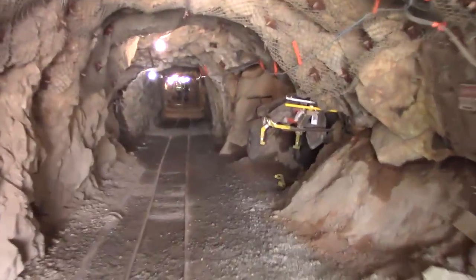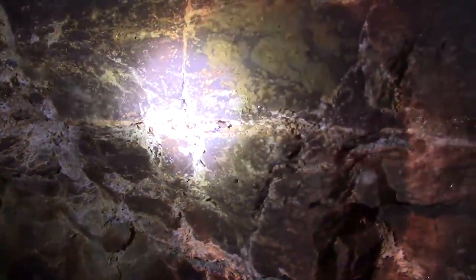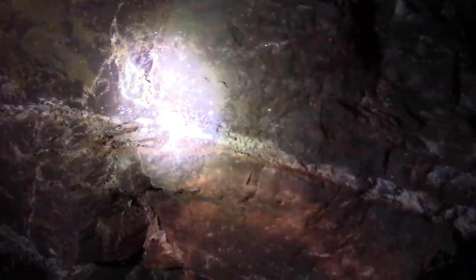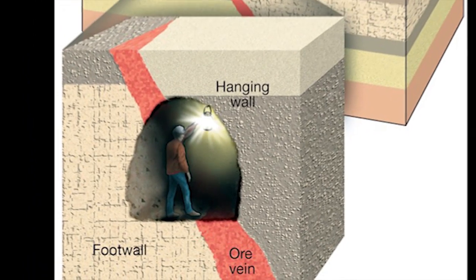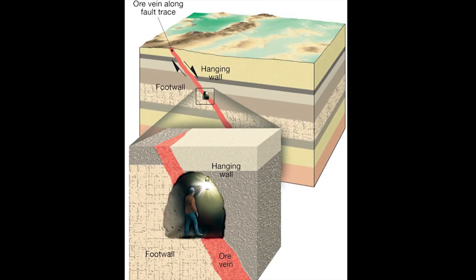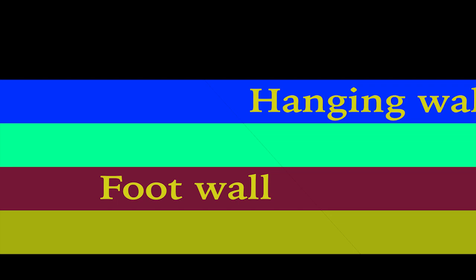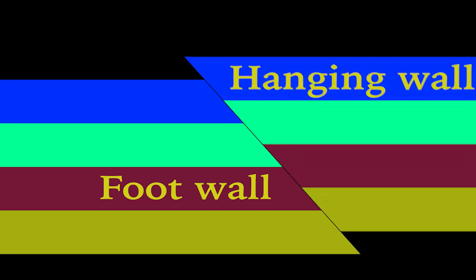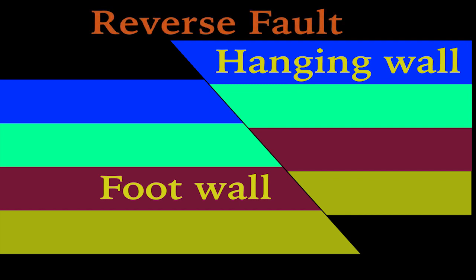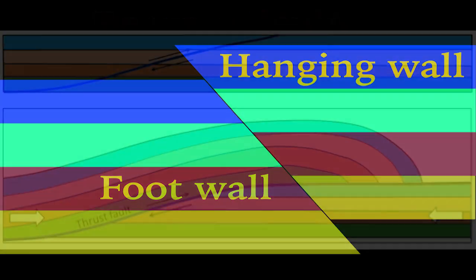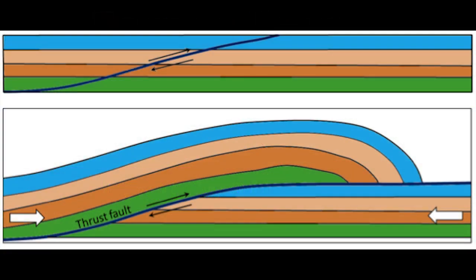Miners through the ages have dug down along faults to pull out the ore material, and finding themselves on the fault, they coined the terms foot wall and hanging wall. The foot wall is under their feet, and the hanging wall is hanging over their heads. Every fault that is not perfectly vertical has a foot wall and a hanging wall, and it is by their relative motion that we know what type of fault we are looking at. All faults caused by compression, whether reverse or thrust faults, have their hanging wall go up relative to their foot wall.